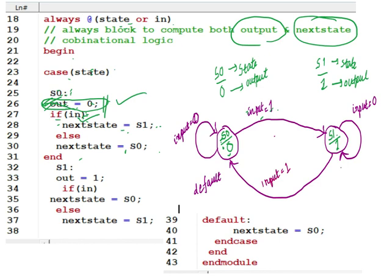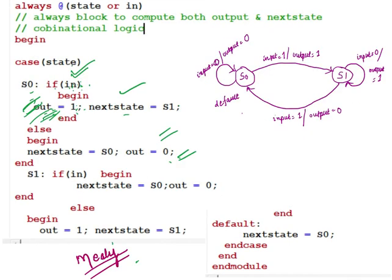Then it checks if in equals 1 — if input equals 1, next state equals S1; else next state equals S0, meaning you remain in that state and output stays 0. In Mealy, when input equals 1, output equals 1. Once in S1 state in Moore, out equals 1 — this is fixed. If input changes and input equals 1, then the next state will be S0 (S1 to S0 transition). Else, next state equals S1, remaining in that state, but output equals 1.